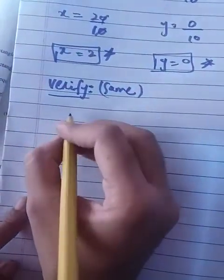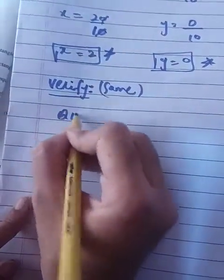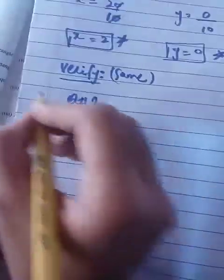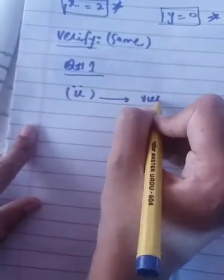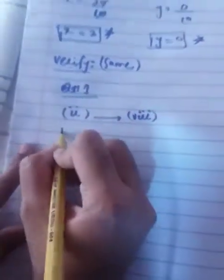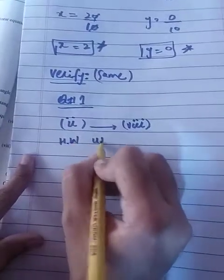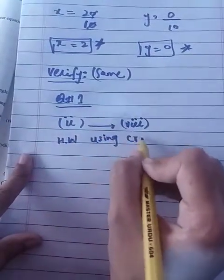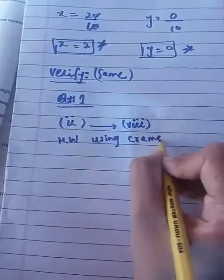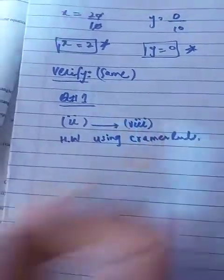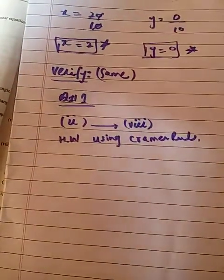This is all for today. We have done Cramer's Rule. Your homework is question number 1, the rest of the parts from part 2 to part 8, which you have to do using Cramer's Rule. Good luck to all of you. Khuda Hafiz.